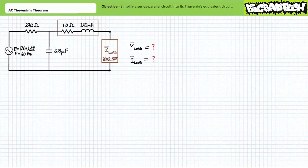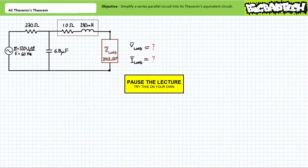Without the use of Thevenin's Theorem, we need to resort to time-consuming series-parallel circuit analysis. If you're up to the challenge, by all means pause the lecture and try this on your own. We're looking for the voltage across and the current through the single load impedance only, and nothing else. If you're tracking, you should have obtained the following results.